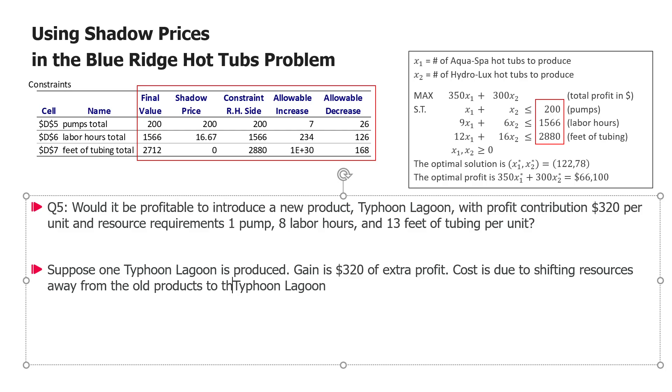The unit of Typhoon Lagoon that we're just now producing, what is this cost? Well if you recall we know actually the cost of losing resources because we know every one pump less will be 200 dollars of profit less, every labor hour less will be 16 dollars 67 cents less, and every foot of tubing will be zero dollars less. And of course remember that it actually works only in a certain range up to the allowable decrease and we should actually again use only one at a time, however at the margin at a small range of changes we can use those shadow prices all of them at the same time.